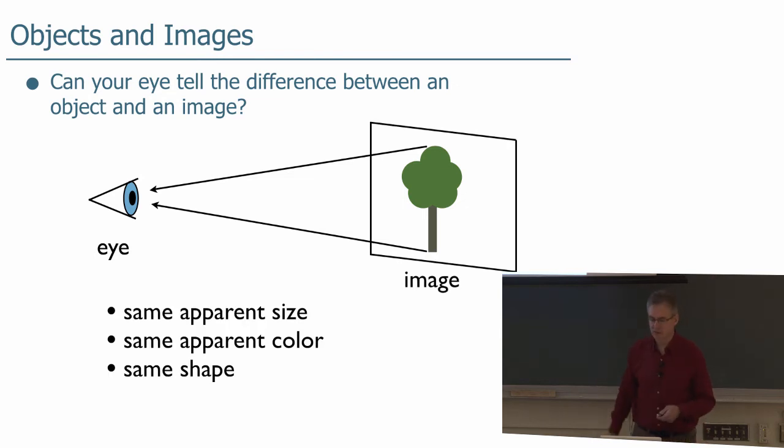Now, if we project an image on the screen, it could have the same apparent size, same color, same shape, or there can be an image in space somewhere which just looks like the real thing. We can't necessarily tell the difference.